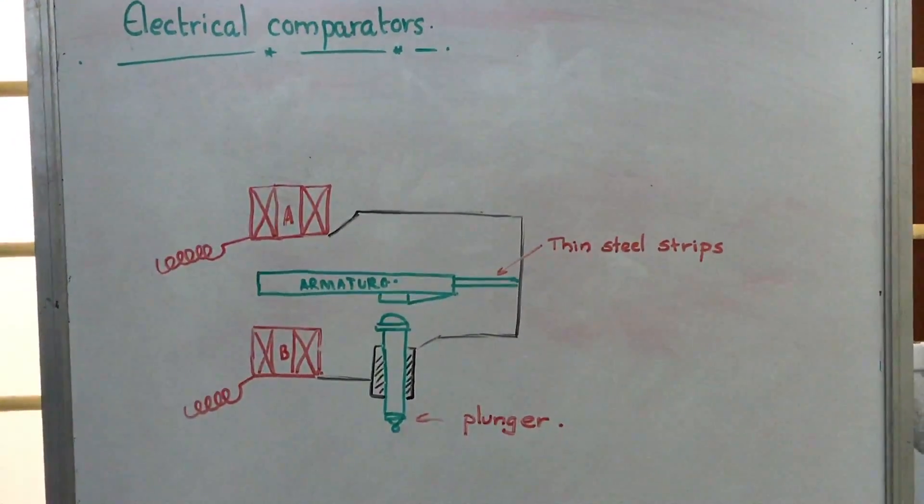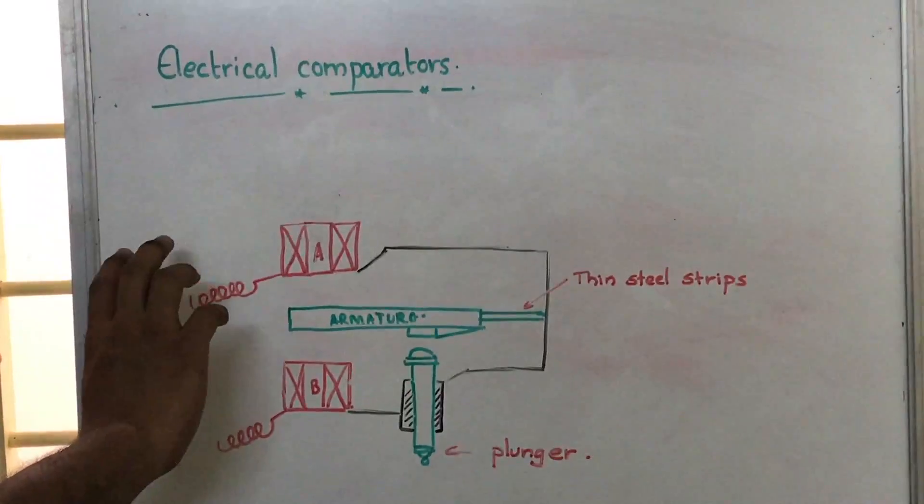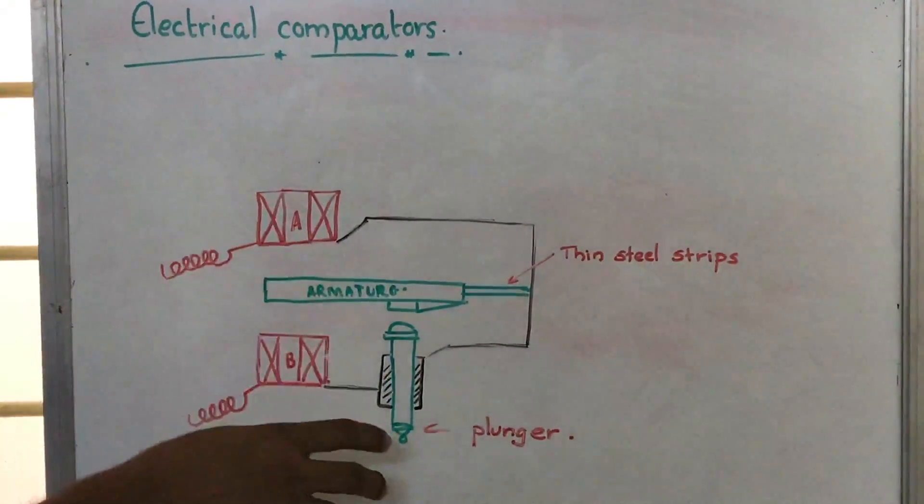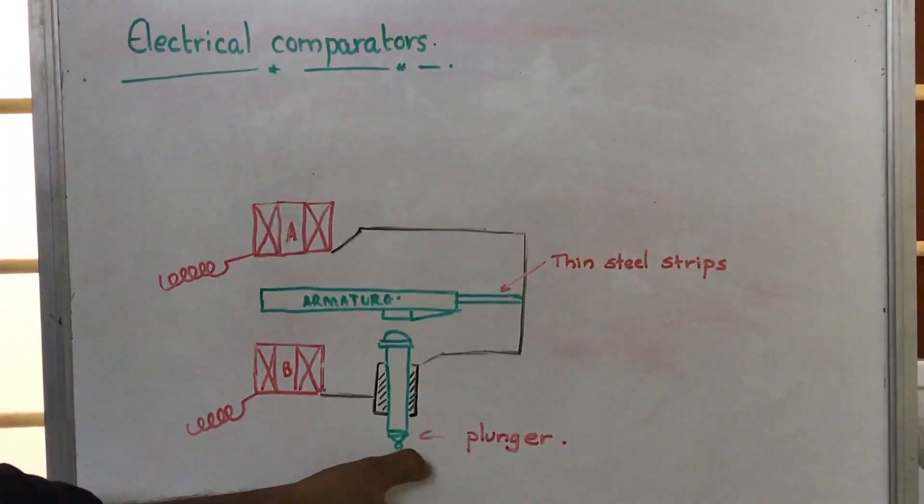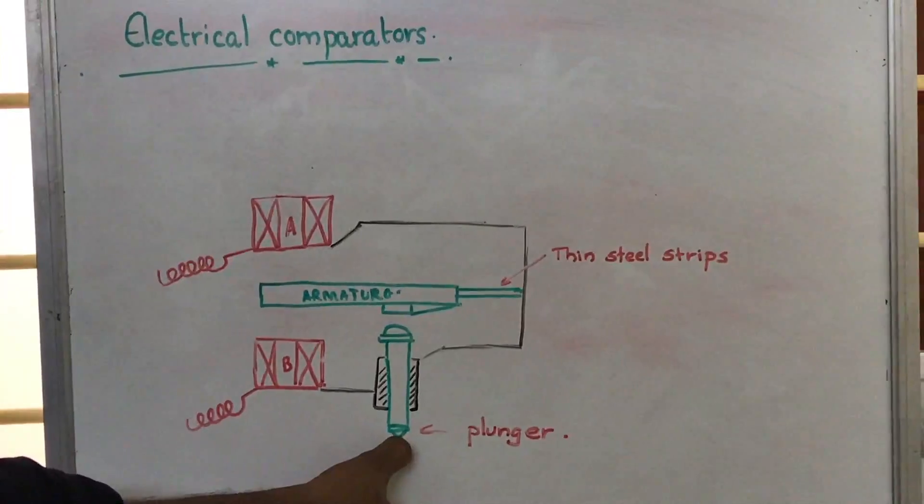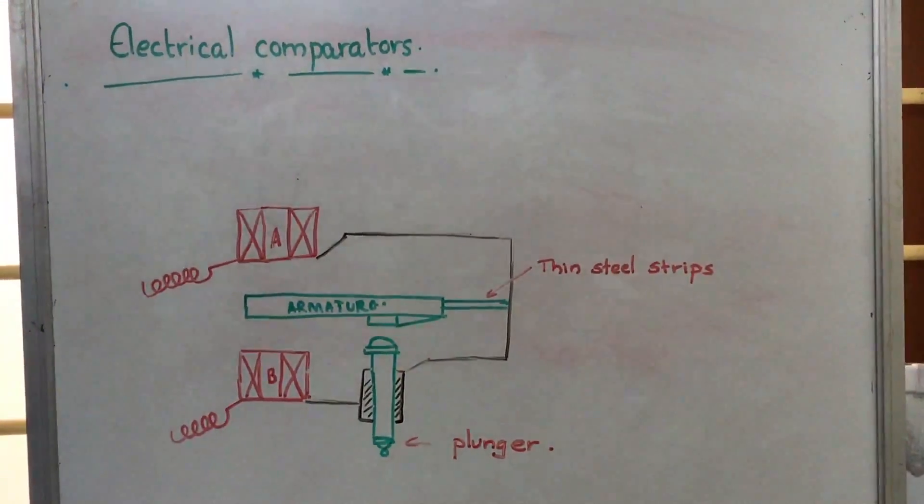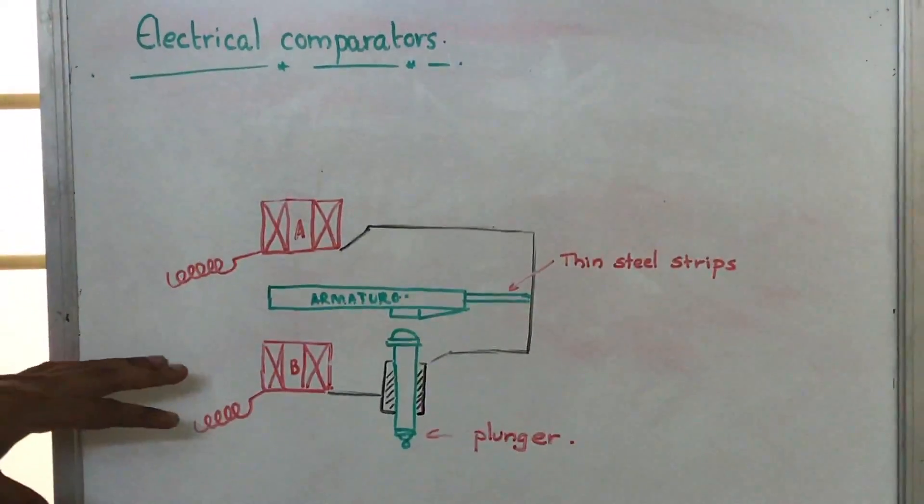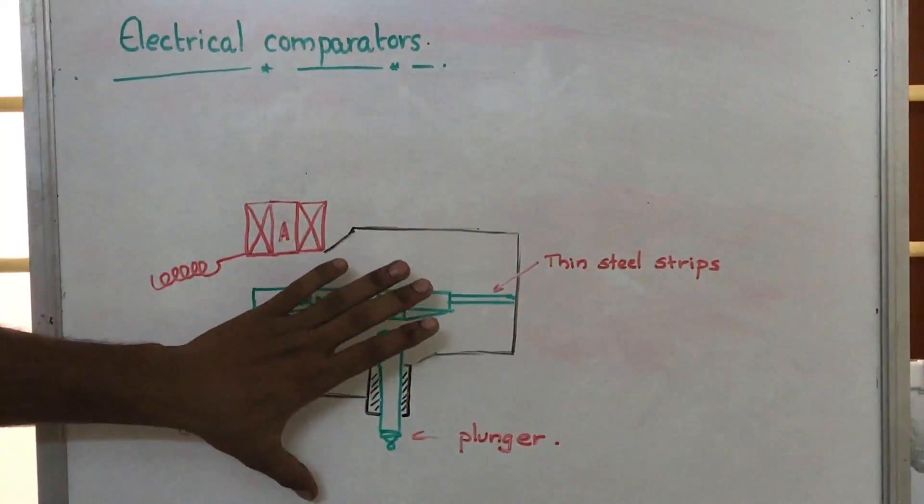The galvanometer will show a deflection, and that deflection will be calibrated to the movement of this plunger so that we can obtain the movement of the plunger or the dimension of the object inserted beneath it. We use a Wheatstone bridge and a plunger-armature system to measure it.